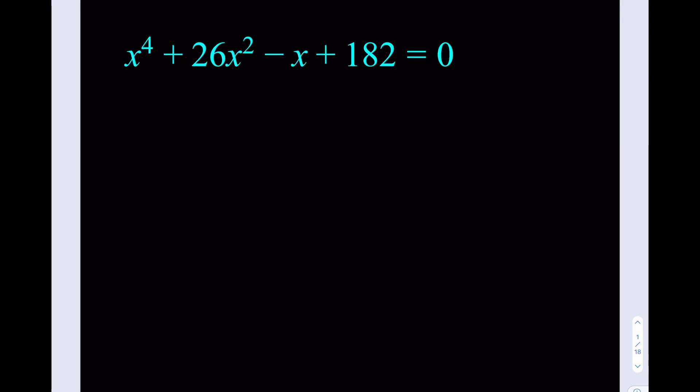I have x to the fourth power plus 26x squared minus x plus 182, which is equal to zero, and we're supposed to solve for x. Quartic equations are not very easy to solve. There's a quartic formula which depends on the cubic, and the cubic formula is complicated and the quartic is much worse. So we're definitely not going to use the formula here — we're going to use some tricks.